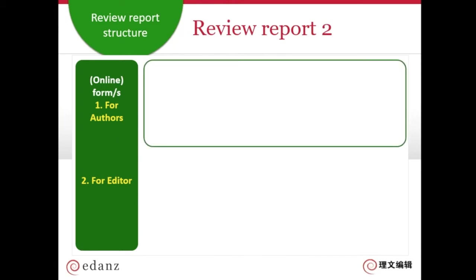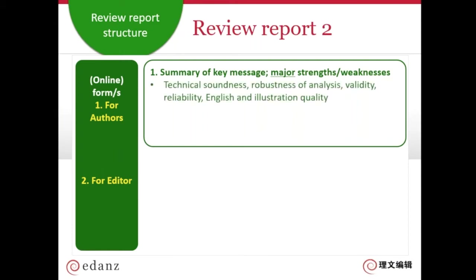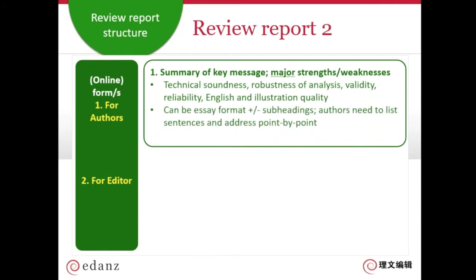One part is a message to the authors and one is a message to the editor. To the authors, you begin with a summary paragraph of what you think the key message of the paper is, and here you list major points, major strengths, and major weaknesses. This includes big things like the technical soundness, the robustness of the analysis, the validity and reliability — covered in the first webinar — and the quality of the English language and illustrations. You might be asked to write an essay or to number your points.